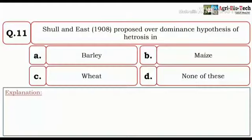Come to the next question. Shull and East in 1908 proposed overdominance hypothesis of heterosis in, and the options given are barley, maize, wheat, and none of these. So here the correct option would be maize.